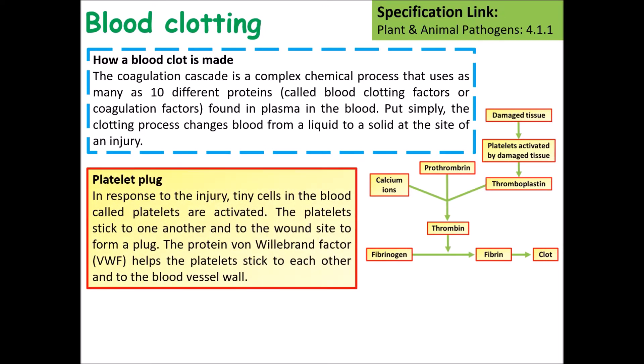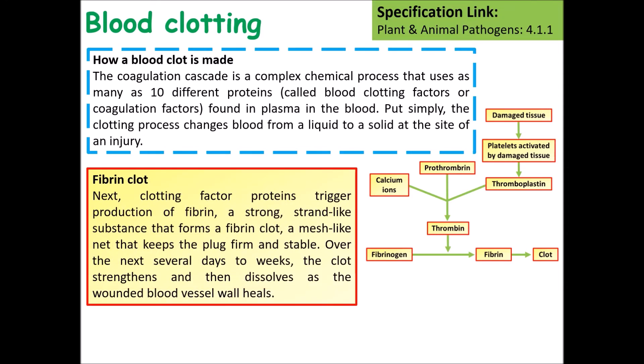A platelet plug is then formed. This is when tiny cells or parts of cells called platelets are activated. These platelets stick to one another and form a plug inside the wound, effectively stopping any more bleeding. Fibrin proteins then interweave between the platelets and help stabilize the plug.